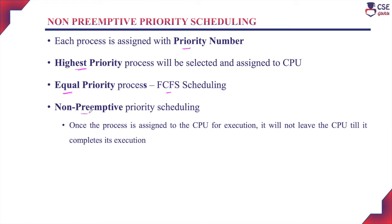One is non-preemptive priority scheduling and the other is preemptive priority scheduling. Now we will discuss non-preemptive priority scheduling. Non-preemptive priority scheduling means that once a process is assigned to the CPU for execution, it will not leave the CPU until it completes its execution. That is, we will not suspend the executing process for any other reason. The process, once assigned to the CPU, completes its execution and only then leaves the CPU for the next process.